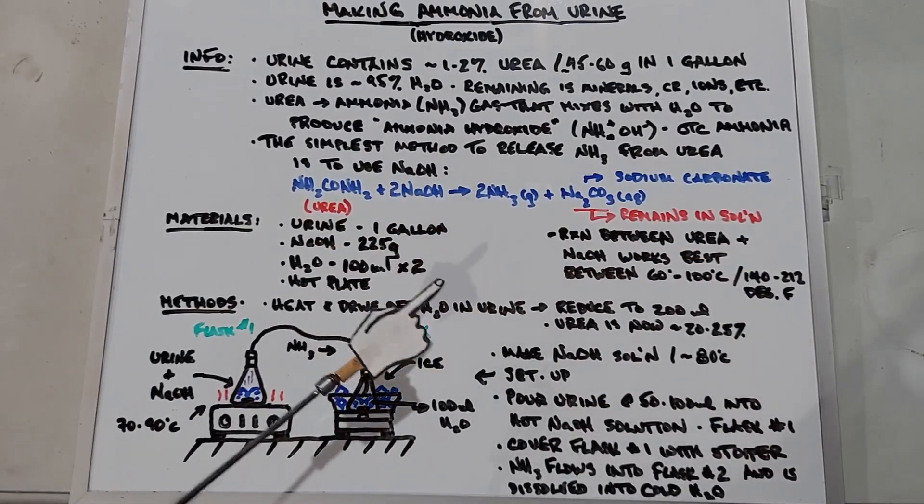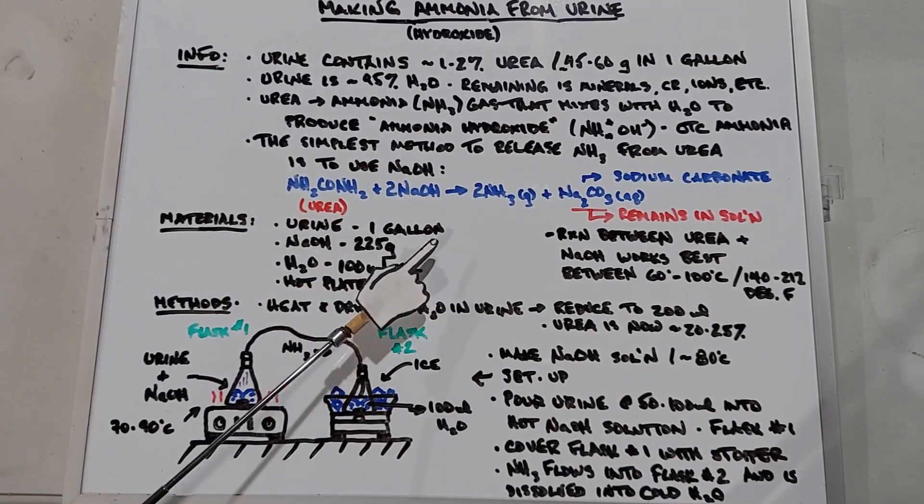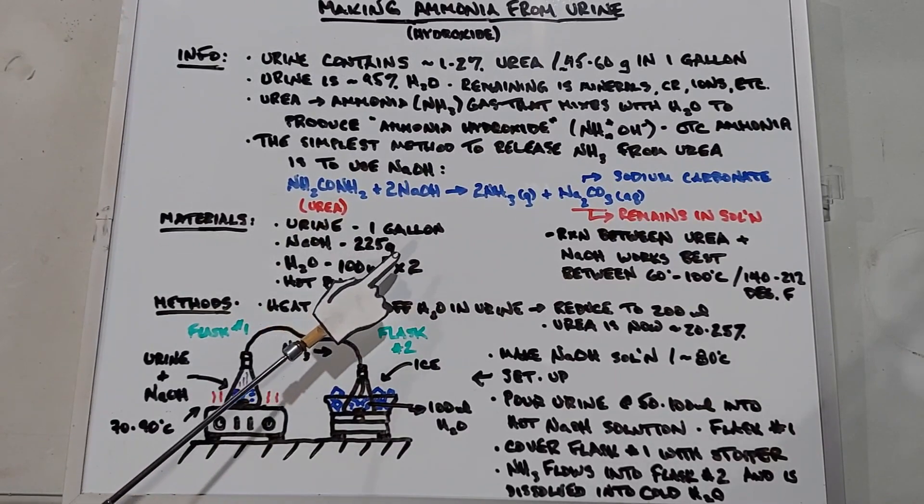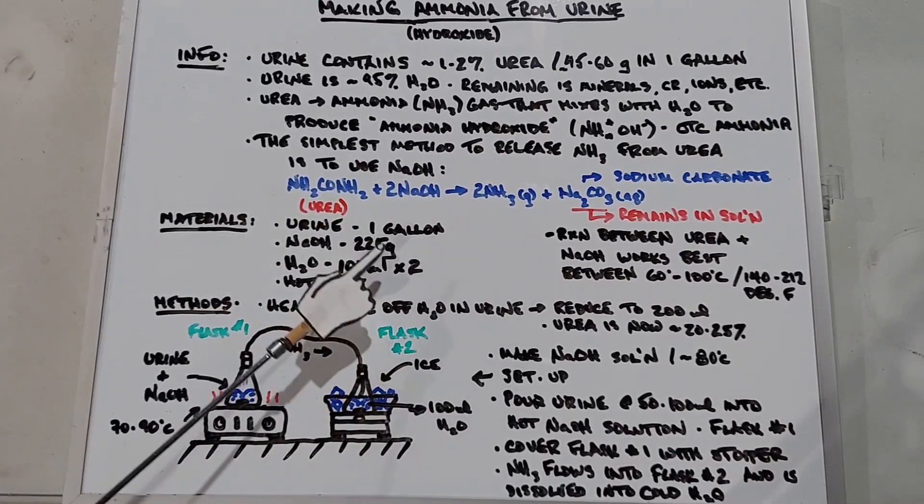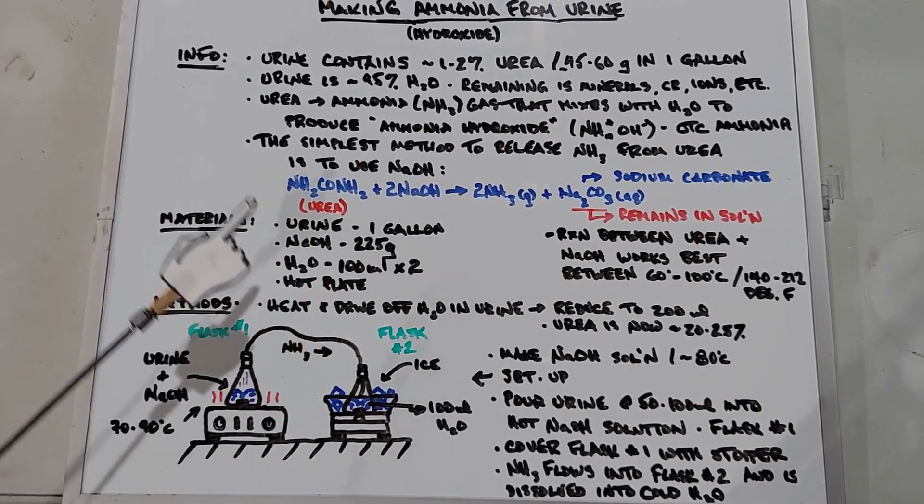The materials that we need: urine, a gallon, this will be mine of course and I'm donating it to science; sodium hydroxide 225 grams; water, two allotments of 100 milliliters; and a hot plate to heat things up.